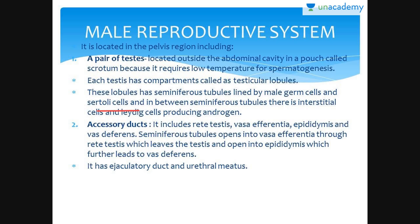There are two kinds of cells very important in the male reproductive system: male germ cells and Sertoli cells. The seminiferous tubule also contains interstitial cells and Leydig cells, which produce androgen in the testis.